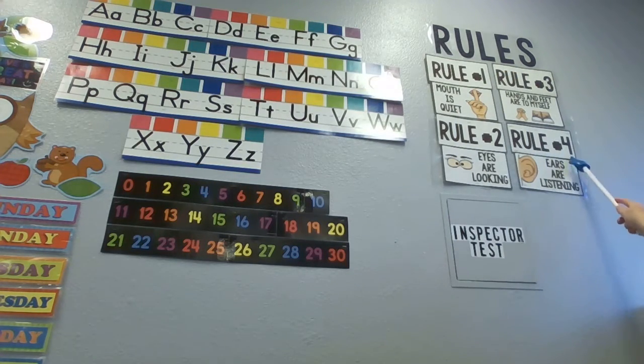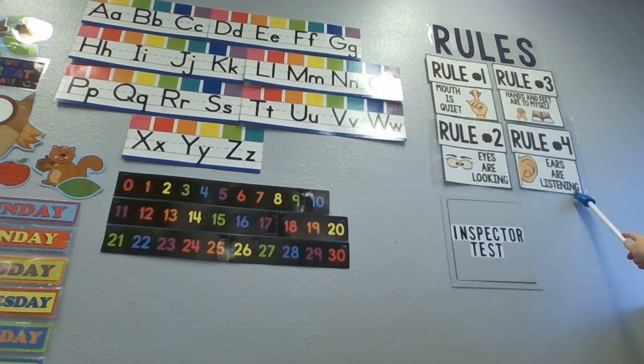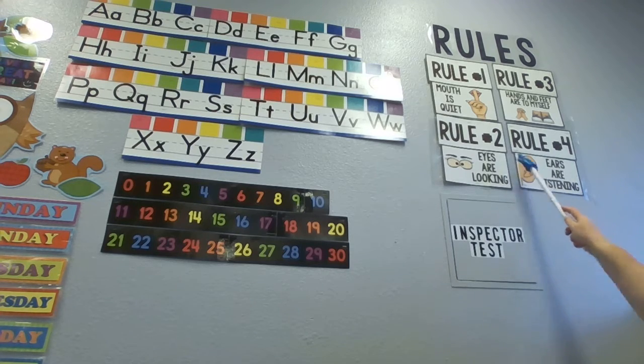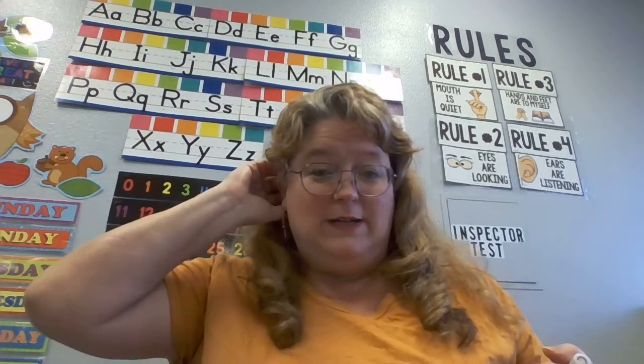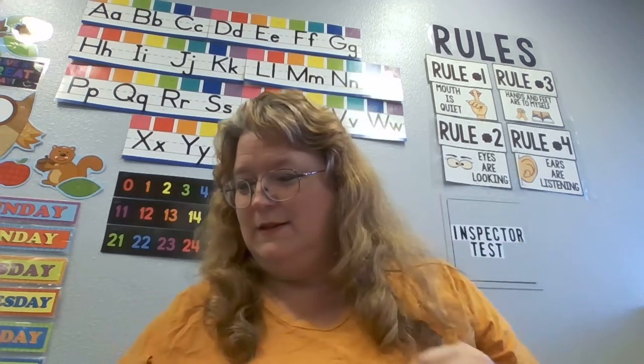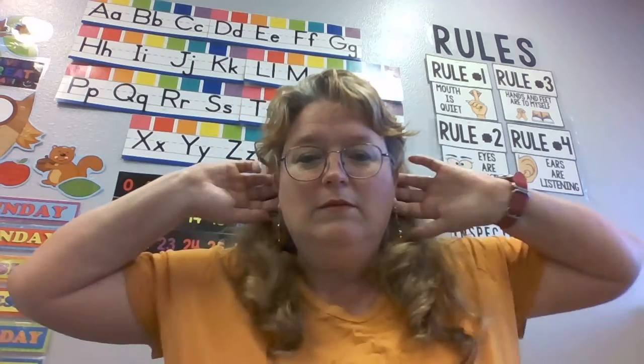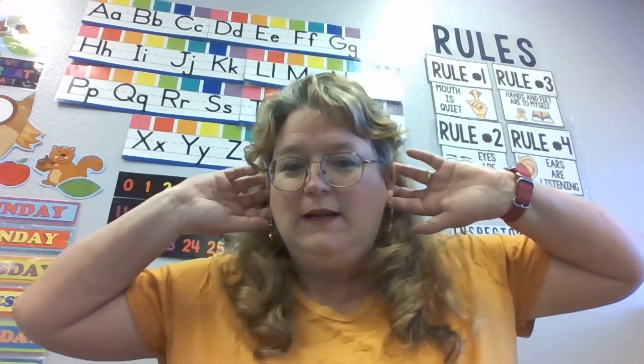Rule number four. Ears are listening. And there's an ear right here. All right, everybody. So for this one, you've got to show me your ears. So let's see. Who can show me their ears? Here. Here's my ears. If I cup them like this, I can hear really good what's in front of me. Ears are listening. Everybody find your ears. Where are they? Where are your ears? Ears are listening. Ears are on the side of your head, right? One on each side of your head. All right. All right.